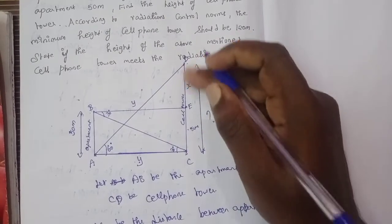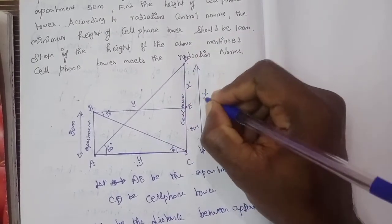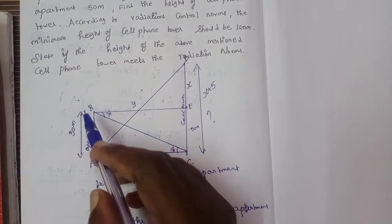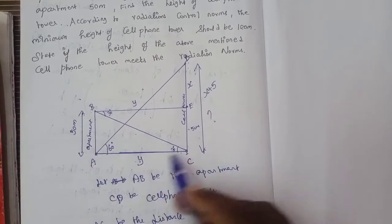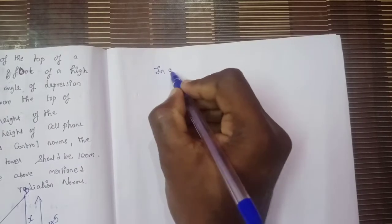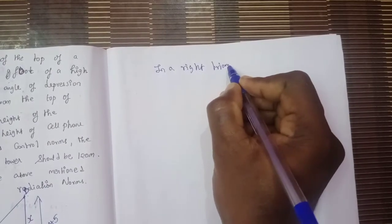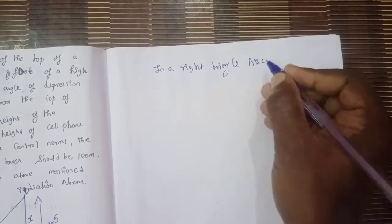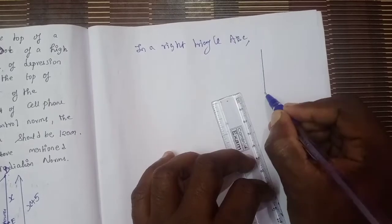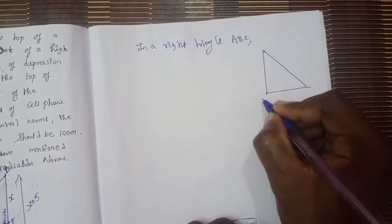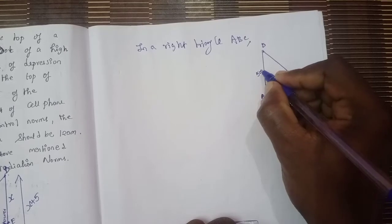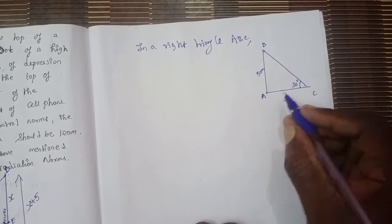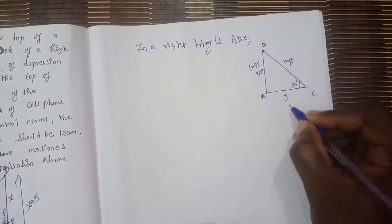First, consider triangle ABC. This triangle has a 30-degree angle. This is a right triangle ABC. The angle is 30 degrees. The apartment AB is 50 meters. This is y. The opposite side and adjacent side are identified.